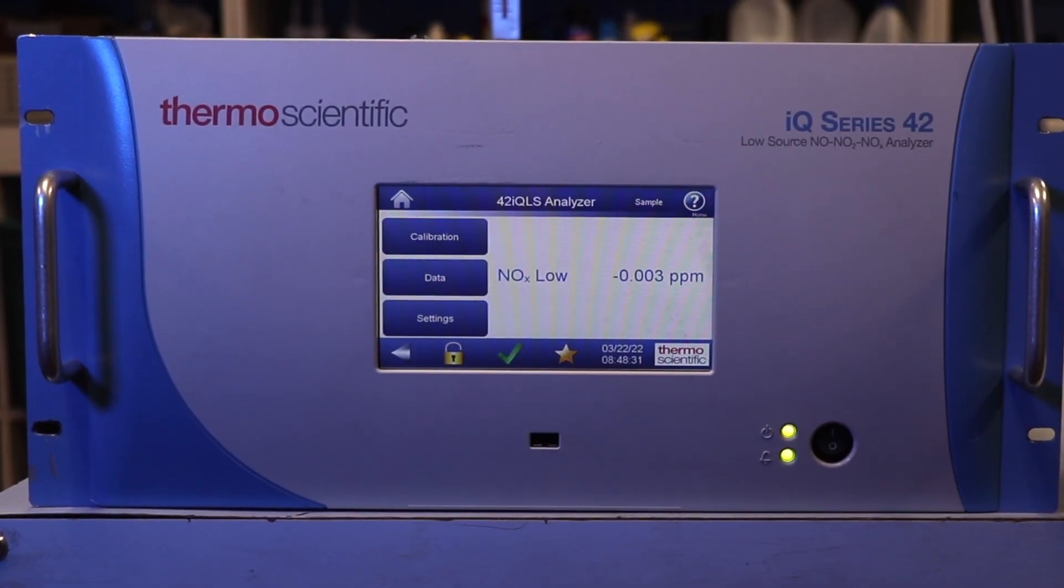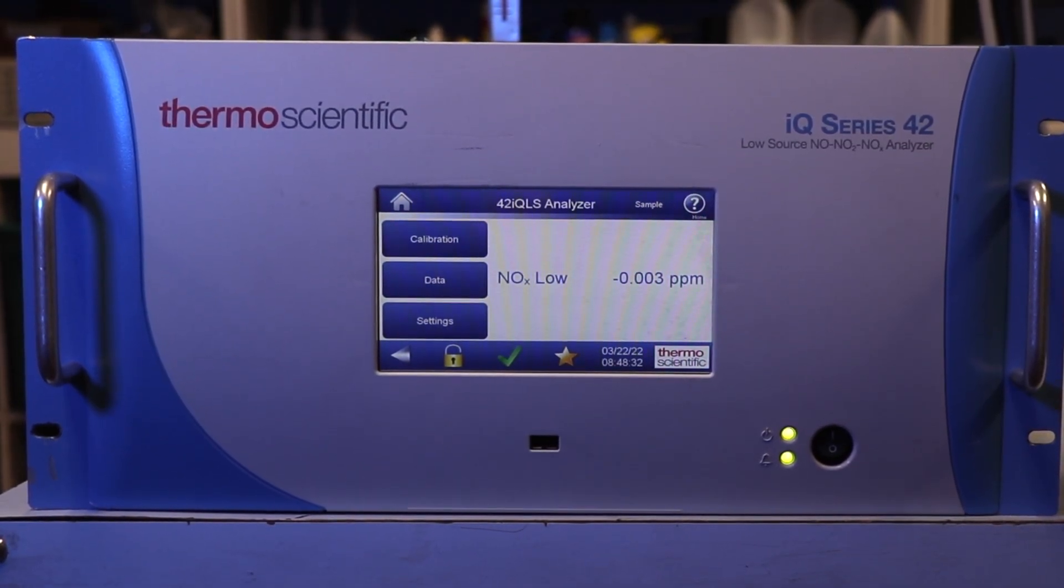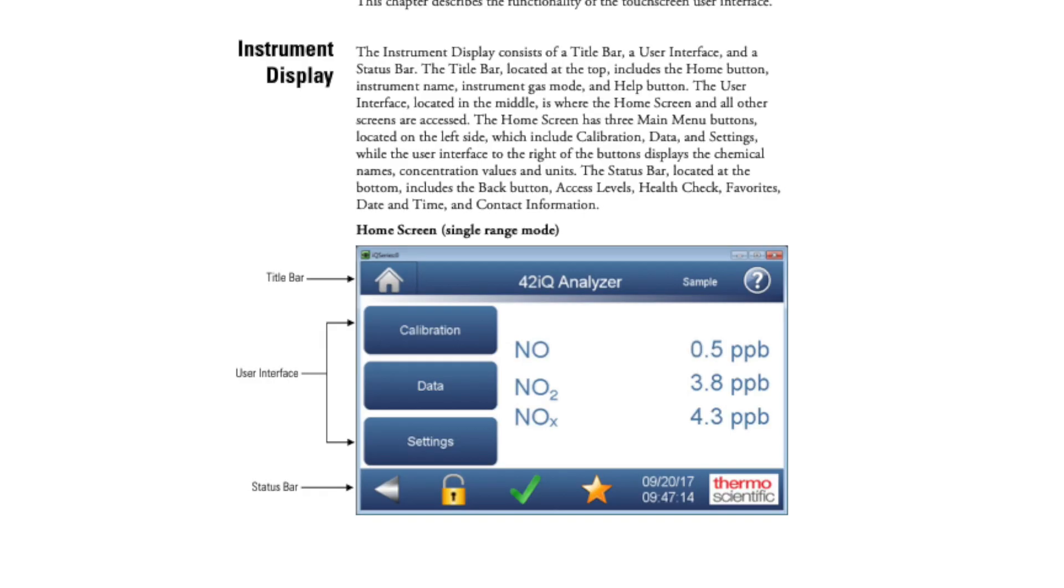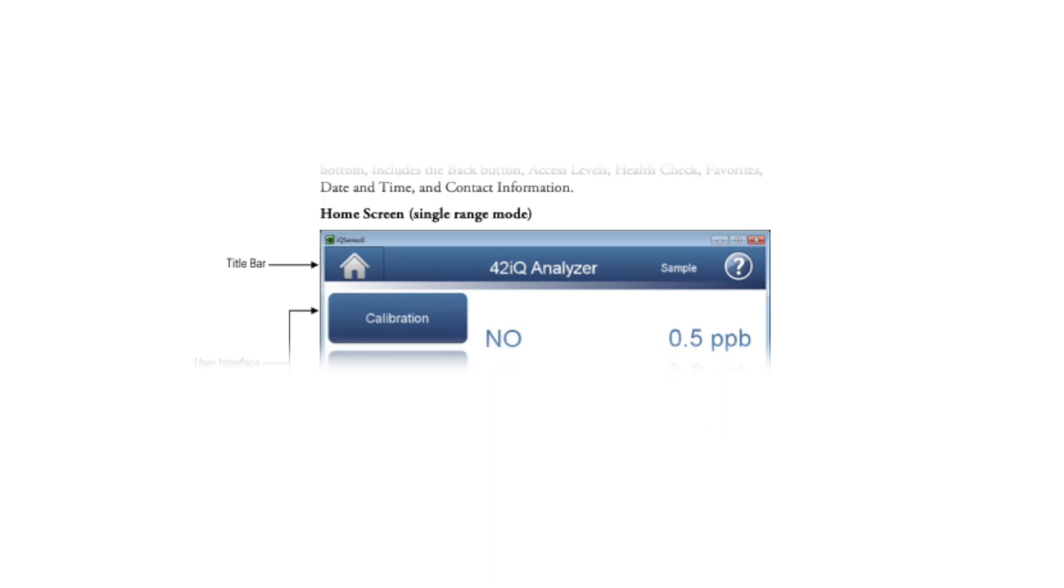One of the major differences moving from the iSeries to the iQ is the touchscreen interface. The new display can be broken down into three sections. On top, the title bar, which includes the home button, title text, gas mode, and help button.